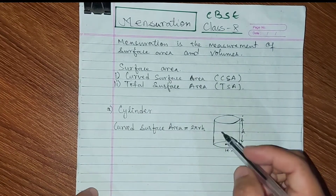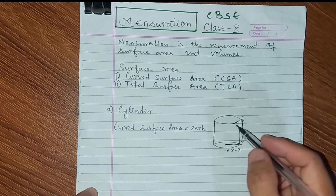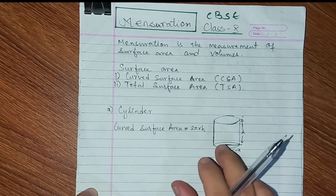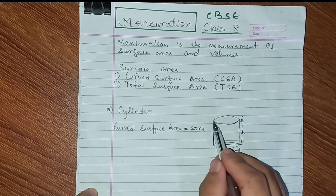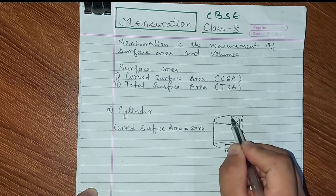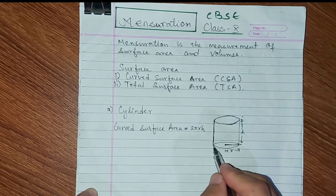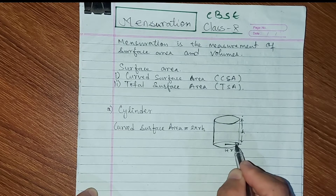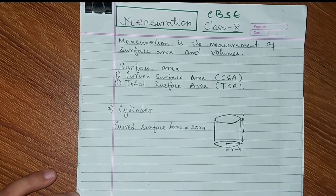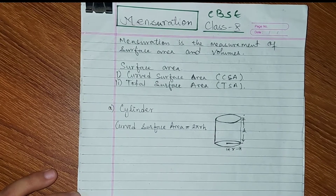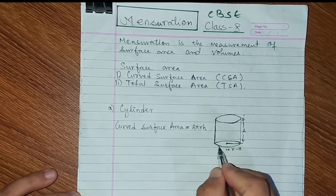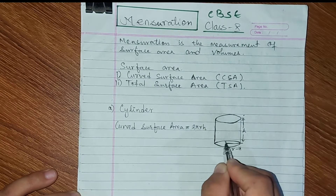Now the curved surface area — this cylinder is the same as hollow. It is hollow. So 2πr is the circumference of the circle.